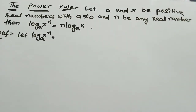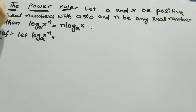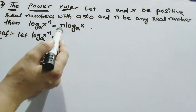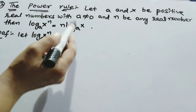Our next property is the power rule — this is the third property. First property was the product rule, second was the quotient rule. Let a and x be positive real numbers with a not equal to 1, and n be any real number. Then log(x^n) base a is equal to n·log x base a.